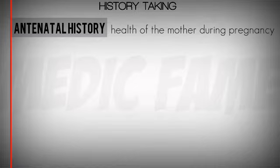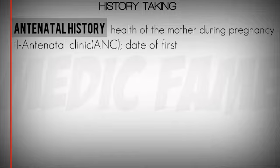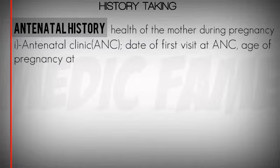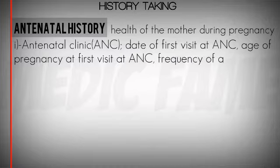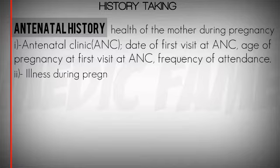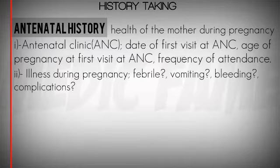Antenatal history involves the following important things: first is the date of first visit at the antenatal clinic, the age of pregnancy at first visit at the antenatal clinic, the frequency of attendance, and second is illness during pregnancy and any complications.